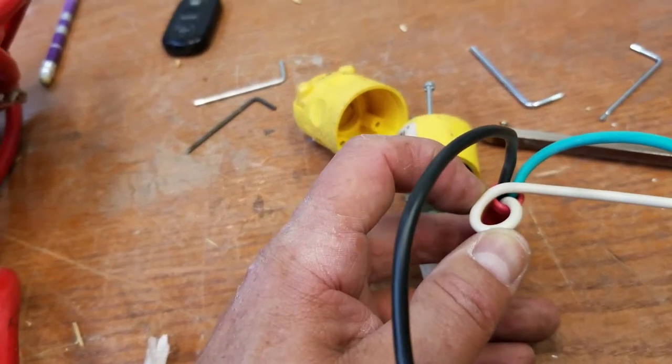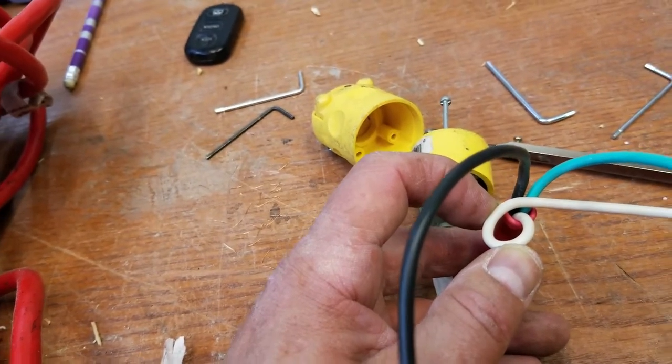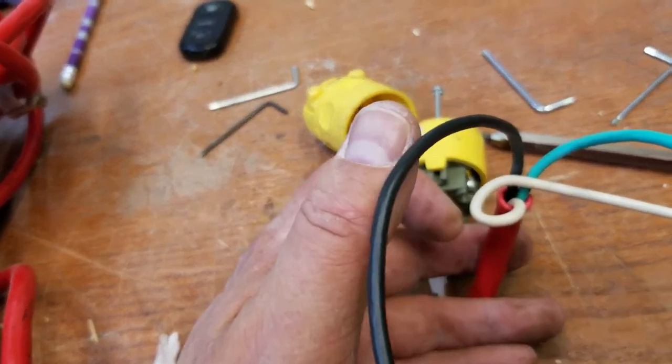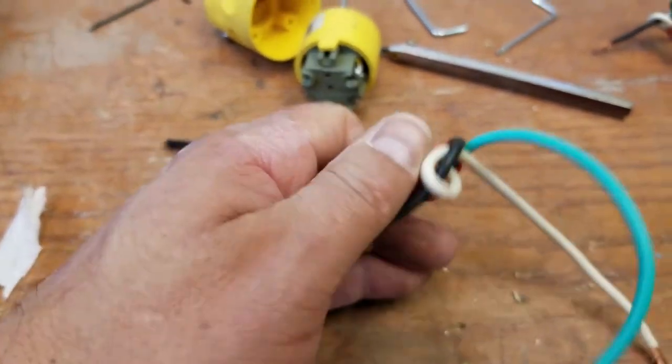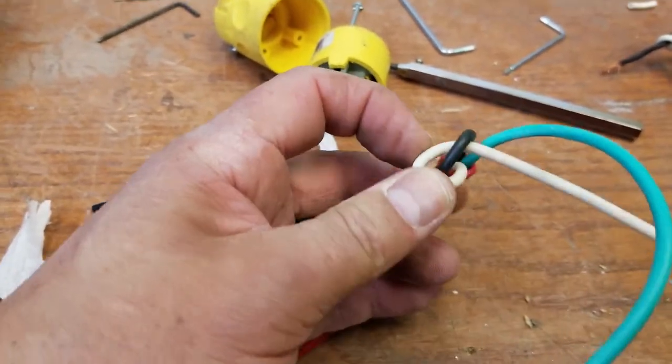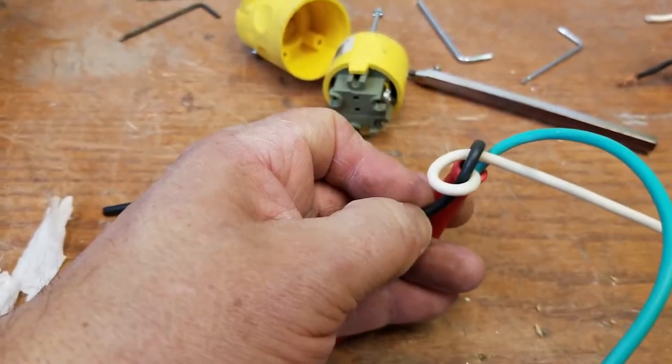Make a loop with the white so that it loops back over itself and crosses through the center of the cable. Then you drop the black wire down through that loop just like that. The white loop, and then you just bring black over top and drop it down through the center.